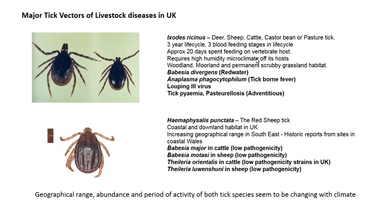Ixodes ricinus has a three-year life cycle with three blood-feeding stages: the larva, the nymph, and the adult. During this three-year life cycle, it spends approximately 20 days on its host, so most of the time it spends in the vegetation. It requires a high-humidity microclimate of around 90%, and its habitats include woodland, moorland, and permanent scrubby grassland, including headlands and hedges of fields.